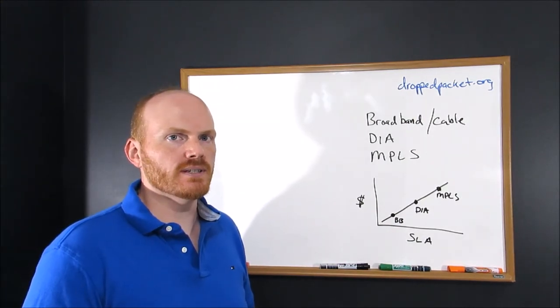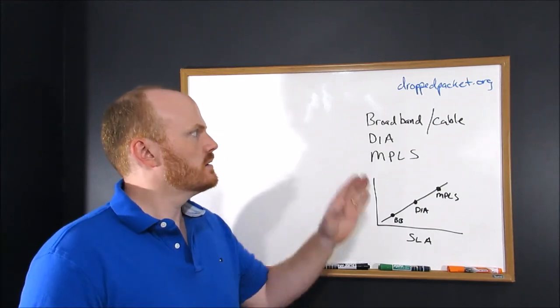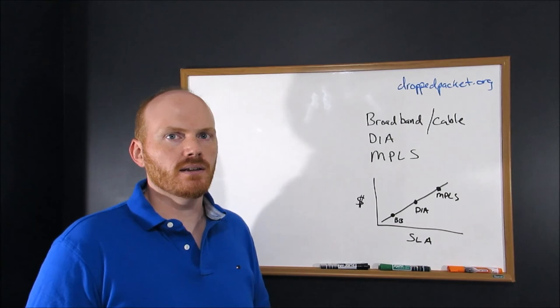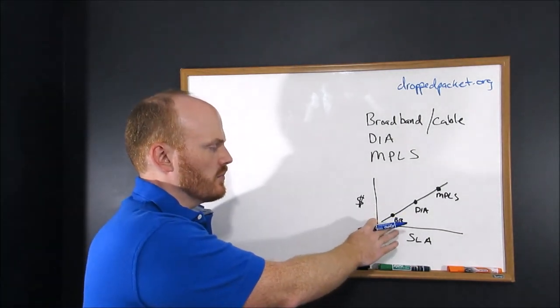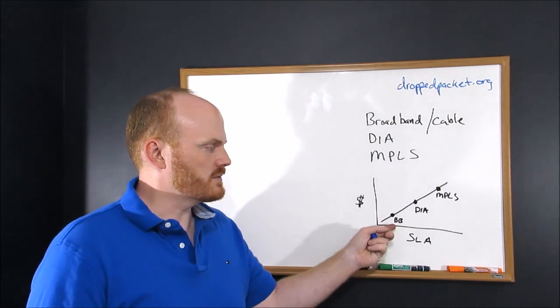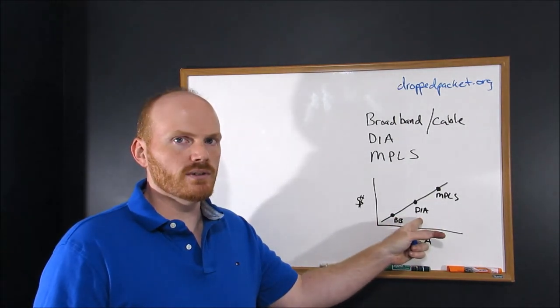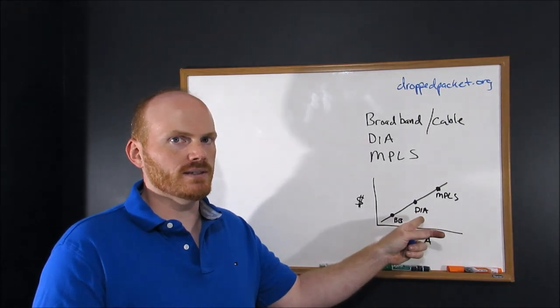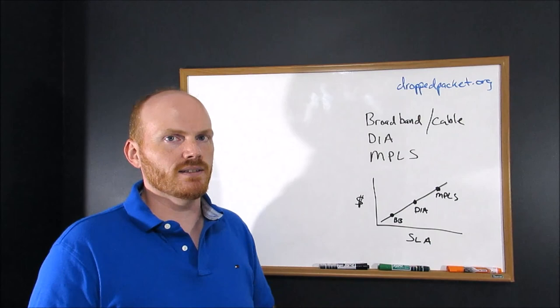Just a quick summary of what we covered today. We went over the three most popular WAN access technologies: Broadband, DIA, and MPLS. Just keep in mind, broadband is usually the cheapest, comes with the worst SLAs. DIA is middle of the road, higher cost, better SLAs. MPLS, most expensive, comes with the best SLAs.